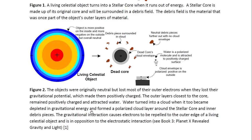The outer layers closest to the core remained positively charged and attracted the water. Water turned into a cloud when it too became depleted in gravitational energy and formed a polarized cloud layer around the stellar core. Polarized means that one side is more positive and the other side is more negative. This occurs because the water molecule is polarized — it has a positive and a negative side. The negative side is the oxygen side and the two hydrogen atoms are more positively charged. By aligning with other water molecules, it creates a layer which is also polarized, more negative on one side.